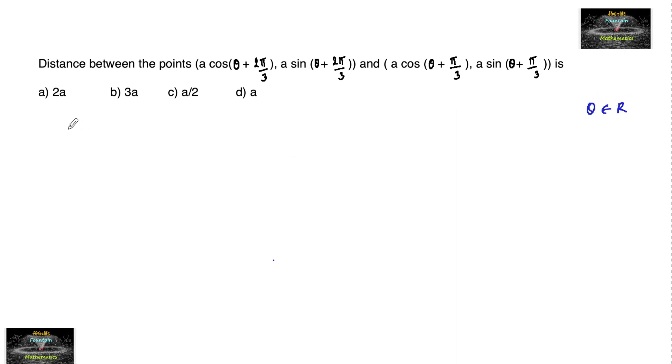Let me assume that theta is equal to 0 degrees so that we can say the points: a cos(0° + 120°), a sin(0° + 120°), which is point A.